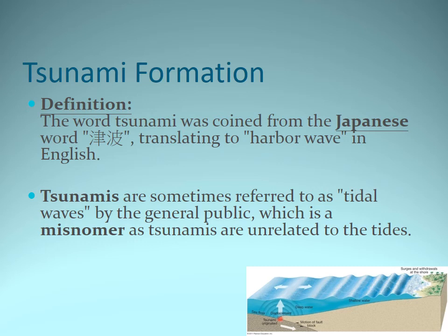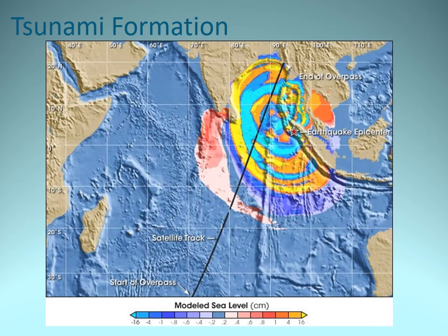By definition, tsunami means 'harbor wave,' but in the media they're often called tidal waves — however, tsunamis have nothing to do with the tides. Here's an interesting example: the 2004 Indian Ocean tsunami on December 26, 2004. It devastated parts of Indonesia, India, and Malaysia. In the open ocean, the height of these tsunami waves is only a few centimeters above sea level, but once they get to land the height increases to pretty dramatic heights.